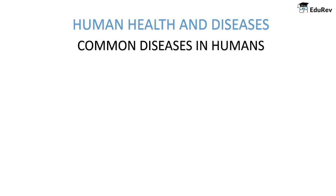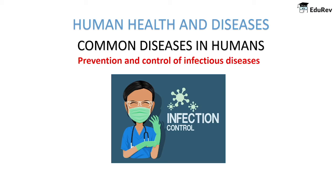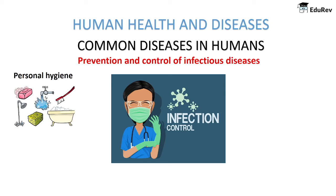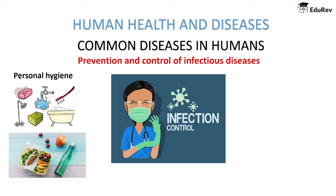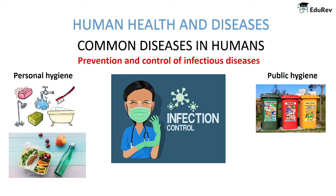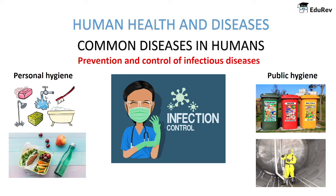Now for preventive measures: maintenance of personal and public hygiene is very important in controlling infectious diseases. Personal hygiene includes keeping the body clean and consuming clean drinking water, food, vegetables, and fruits. Public hygiene includes proper disposal of waste and excreta, and periodic cleaning and disinfection of water reservoirs, pools, and tanks. These measures help prevent diseases like typhoid, amoebiasis, and ascariasis.